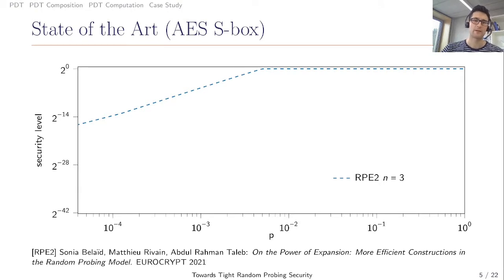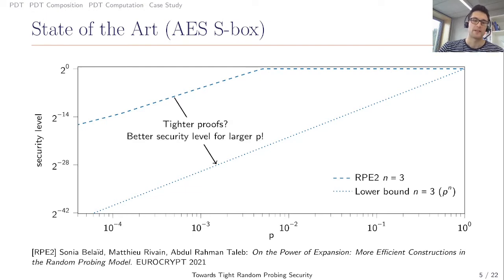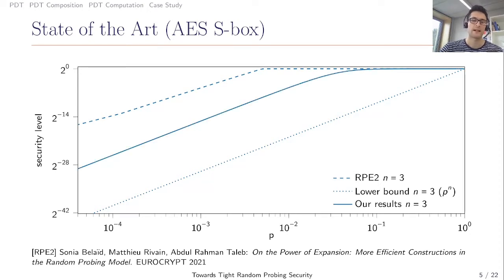Here you can see the security level of the resulting circuit. The security level depends on our leakage probability and tells us with which probability we cannot guarantee security anymore. The results you can see here are the results of Belaid, Rivian and Taleb published at EuroCrypt 2021. For the security level we can also give a vague lower bound. With our results we want to provide tighter proofs for the security level. Here you can see our results for N equals 3.